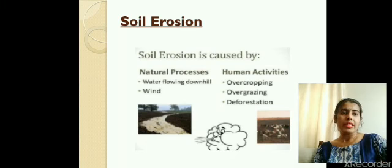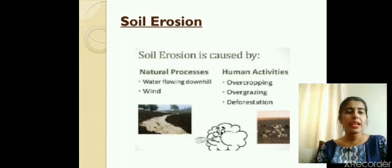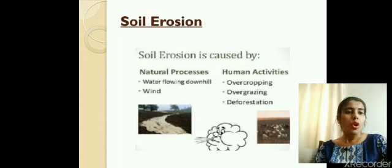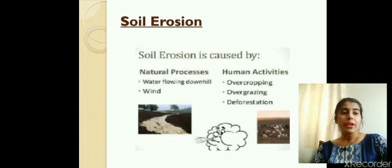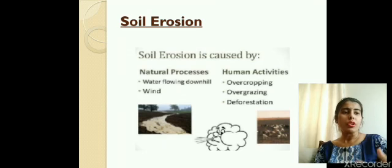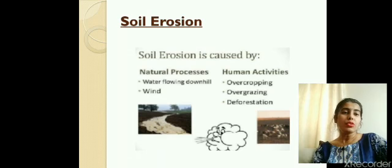Human activities like overcropping — using the same piece of land for crops again and again — and overgrazing — using the same land for grazing of cattle repeatedly — deplete the quality of the soil and loosen the top layer. Deforestation is the cutting down of trees on a large scale. Because the roots of trees bind the soil together and do not let it flow with water or wind, deforestation contributes to soil erosion.